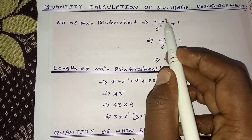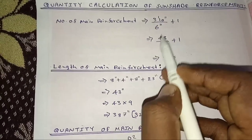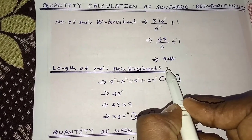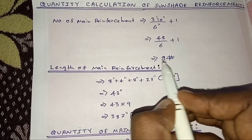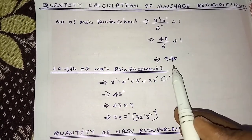Now, this is the inch. We will substitute it. The number of reinforcement is 9 numbers. The main reinforcement is 9 numbers.